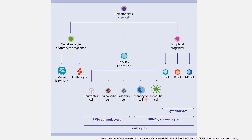Monocytes and dendritic cells are agranulocytes — they do not contain granules in their cytoplasm. These are peripheral blood mononuclear cells, PBMCs. T cells, B cells, and natural killer cells come from the lymphoid progenitor and are collectively known as lymphocytes. This entire hematopoiesis gives us leukocytes — WBCs — which are involved in our immune system.